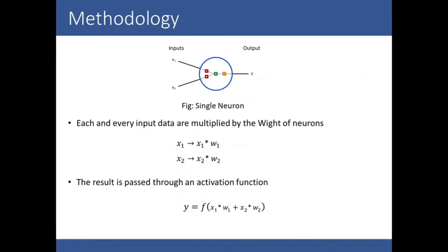Looking at a single neuron: X1 and X2 are inputs and Y is the output. Every input is multiplied by the weight of the neuron — X1 is multiplied with weight 1 and X2 is multiplied by weight 2. Weight represents the multiplicative factor of the filter, and the result is passed to an activation function. The activation function decides whether a neuron should be activated or not by calculating the weighted sum.